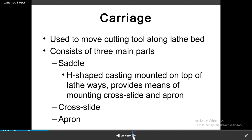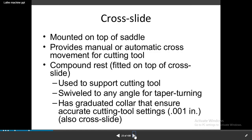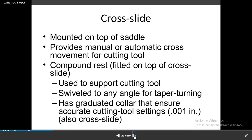The carriage consists of three main parts: saddle, cross slide, and apron. The saddle is an H-shaped casting mounted on top of the lathe base. The cross slide is on top of the saddle and provides manual or automatic cross movement of the cutting tool. The compound rest is fitted on top of the cross slide and supports the cutting tool, with a graduated collar that ensures accurate tool setting to 0.01.